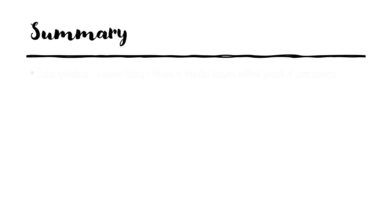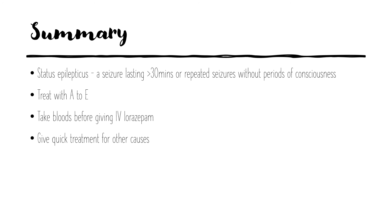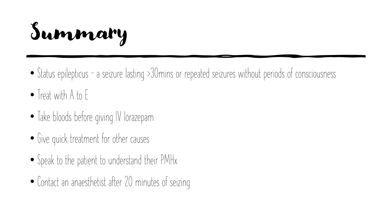So, status epilepticus — here's the summary. Firstly, it's defined as a seizure lasting greater than 30 minutes, or repeated seizures without periods of consciousness. You should treat by using your A to E survey. Get IV access, take bloods, then give IV lorazepam. Treat other potential causes like alcohol withdrawal with thiamine and glucose for hypoglycemia. Speak to the patient after they recover to work out whether they have any predisposing factors. And lastly, always contact an anaesthetist after 20 minutes of seizing. They may need to give a propofol infusion if the seizures are continuing. And that's it. Thank you for listening.